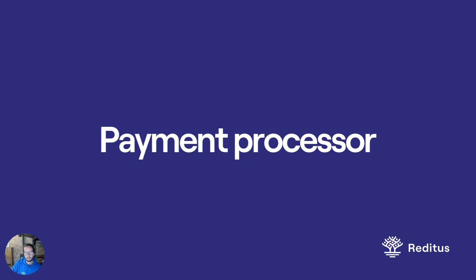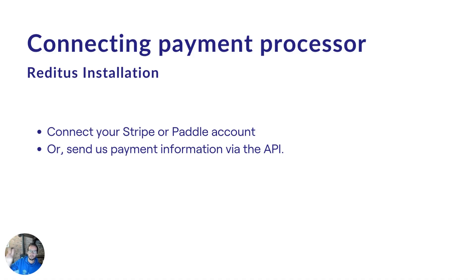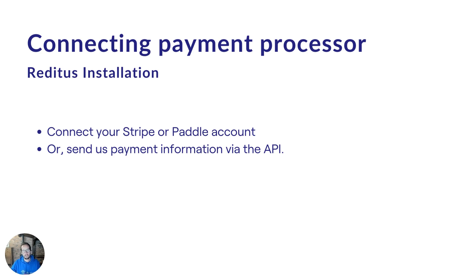For connecting your payment processor, we have two direct integrations: one with Stripe and one with Paddle. That's basically a three-click setup. If you don't have Stripe or Paddle, contact us — we do have an option available via the API. If you have any GDPR concerns, contact us as well and we're happy to walk you through how to get things set up via the API.